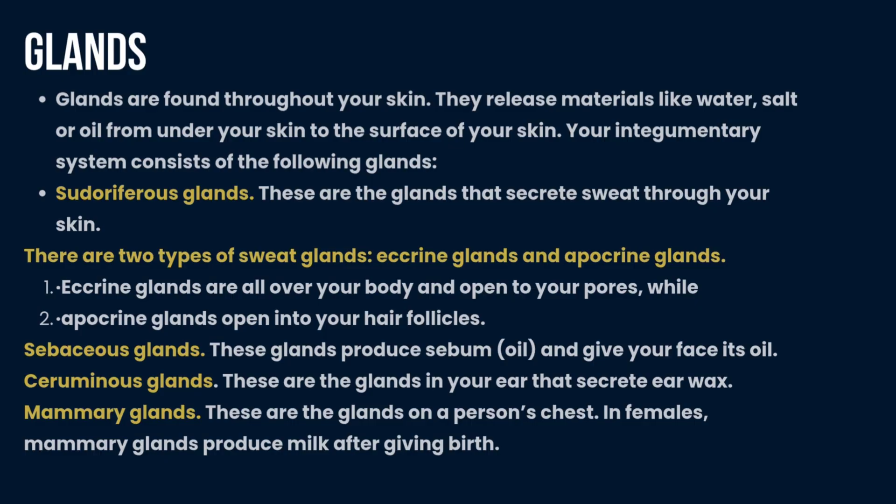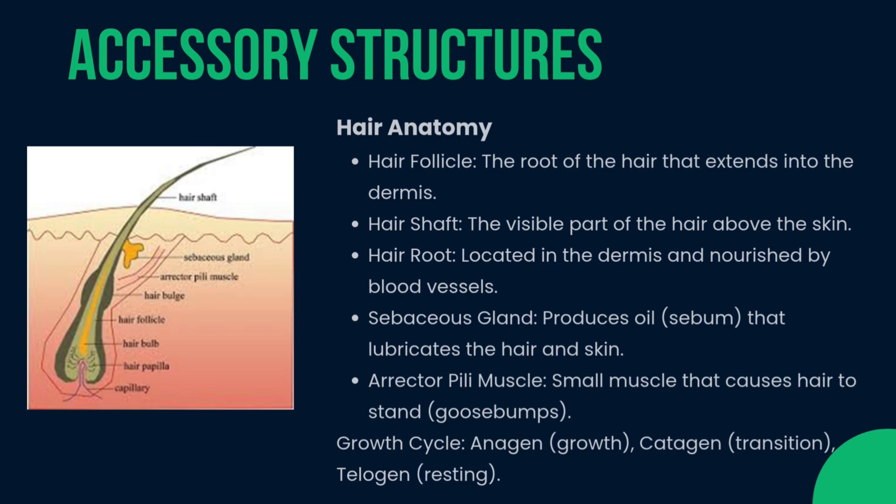Glands are found throughout the skin and release materials like water, salt, or oil from under the skin to the surface. The integumentary system consists of the following glands: the sudoriferous glands, which secrete sweat through the skin. There are two types of sweat glands: eccrine and apocrine. Eccrine glands are present all over the body, whereas apocrine glands open into the hair follicles.